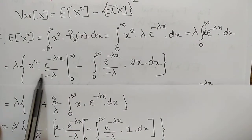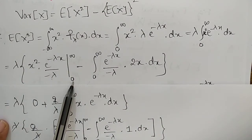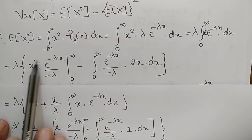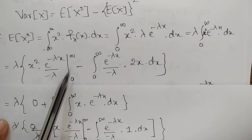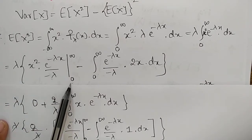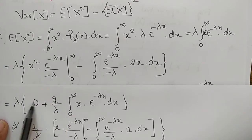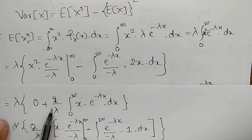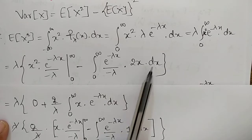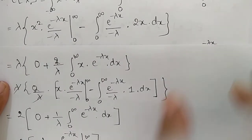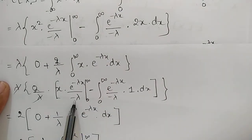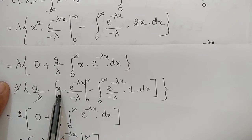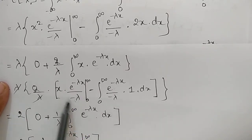Applying the limits: at x = ∞, e^(−λ∞) = 0; at x = 0, the term is 0. So the boundary term vanishes. Taking the minus sign into account, the remaining expression becomes (2/λ)·∫₀^∞ x·e^(−λx) dx. We apply integration by parts again: x·[e^(−λx)/(−λ)] from 0 to ∞ minus ∫₀^∞ [e^(−λx)/(−λ)]·1 dx. The boundary term again gives 0.